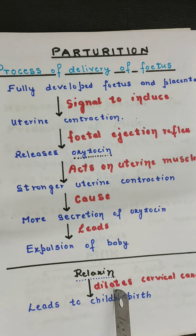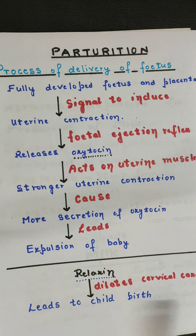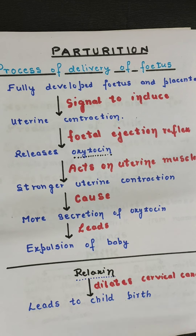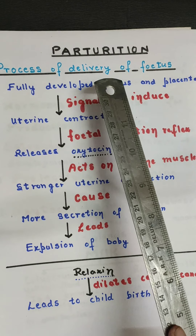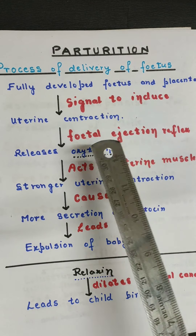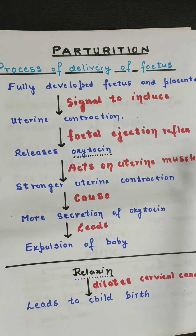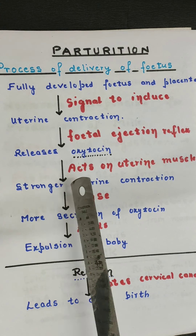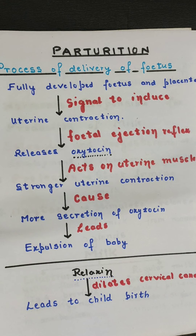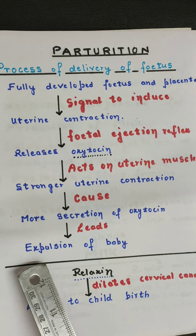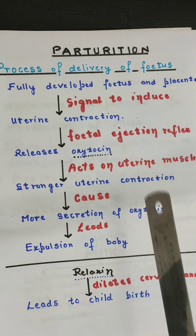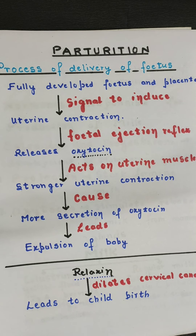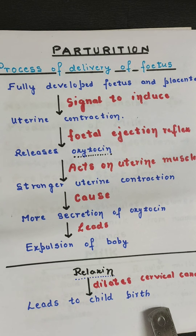Key points to remember for this topic: signals are induced by both the fetus and placenta, causing the fetal ejection reflex, which activates the pituitary gland to secrete oxytocin, bringing uterine contraction for delivery of the baby. The second important hormone is relaxin, which helps in dilating the cervical canal for expulsion of the baby. So two hormones — oxytocin and relaxin — are critical for parturition.